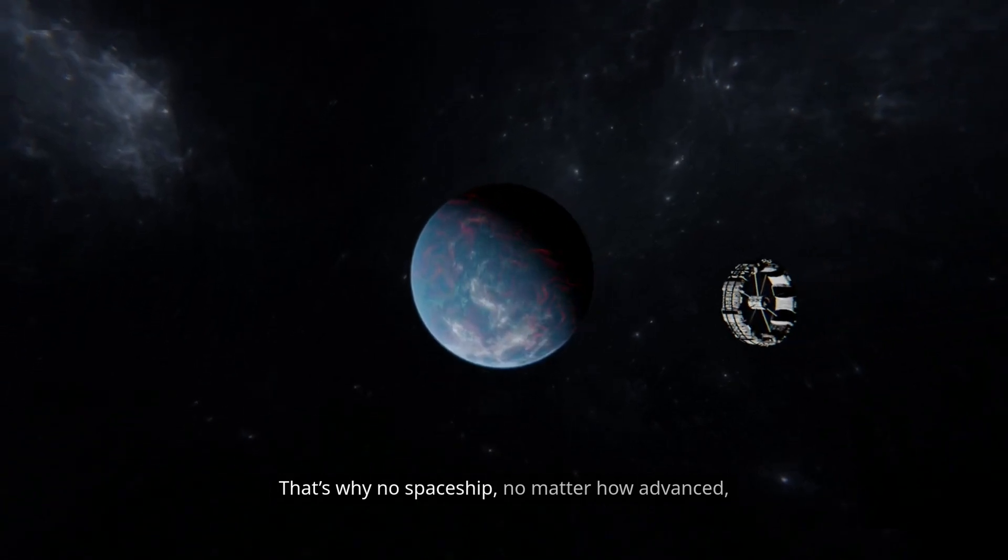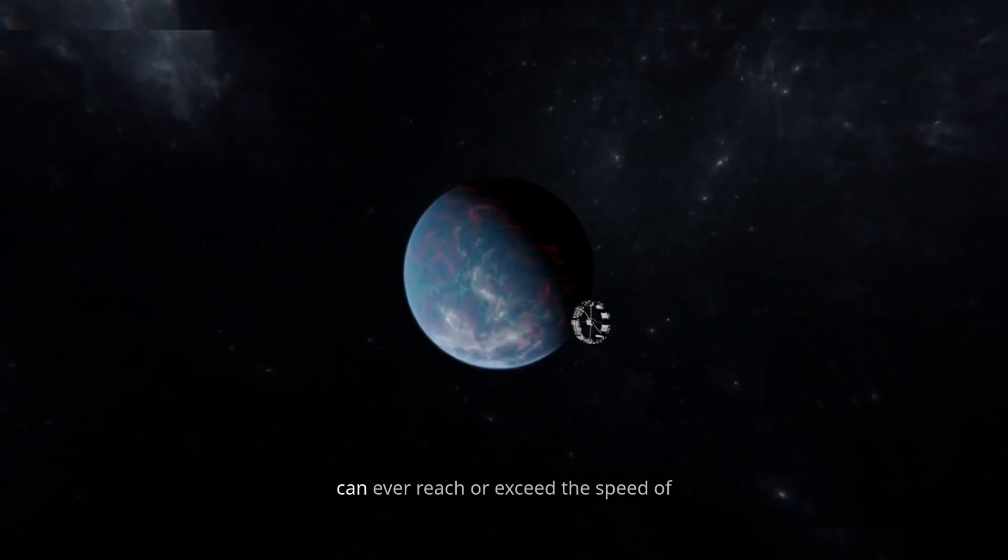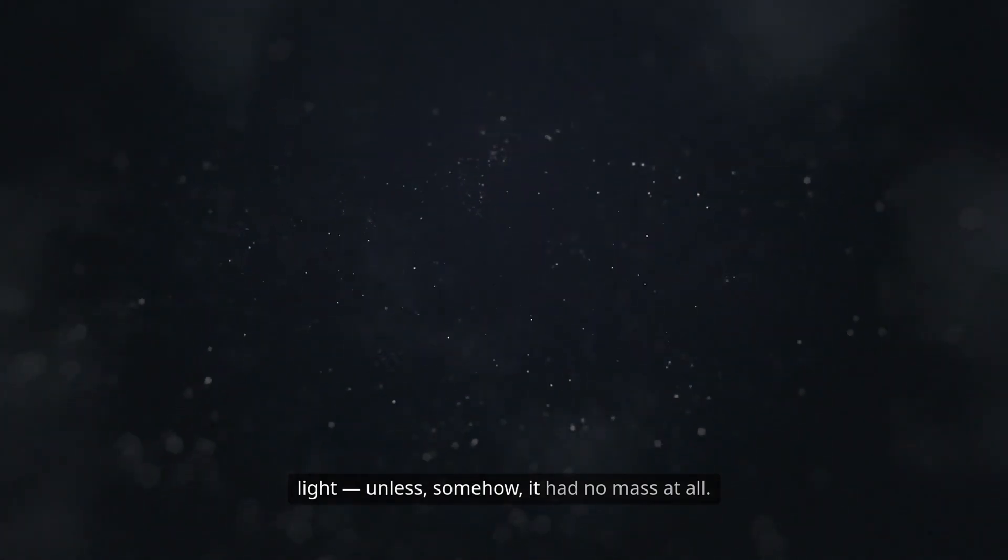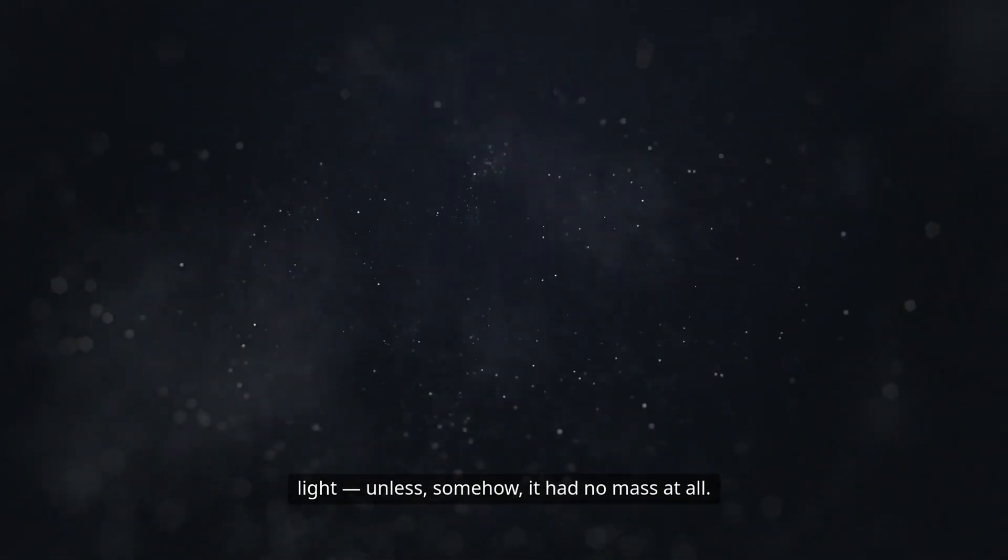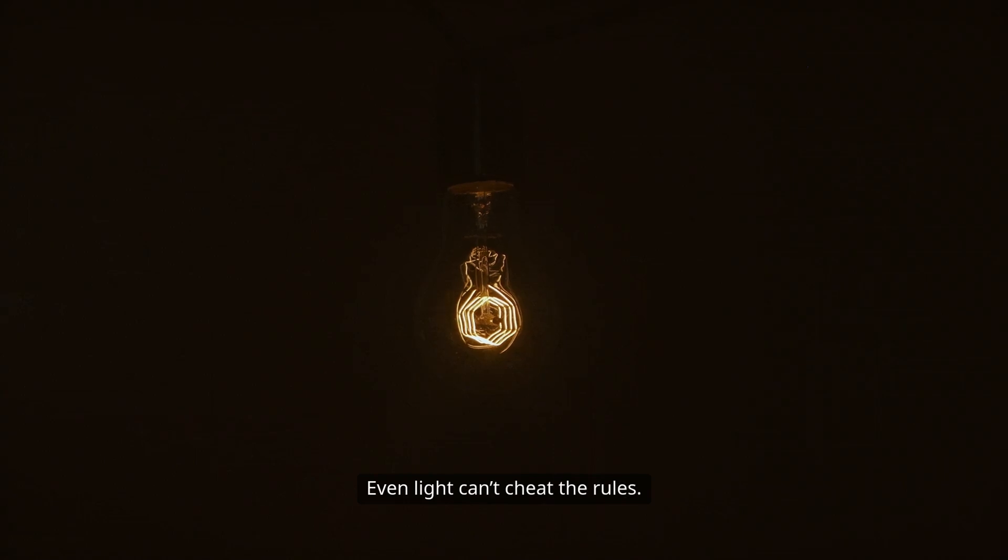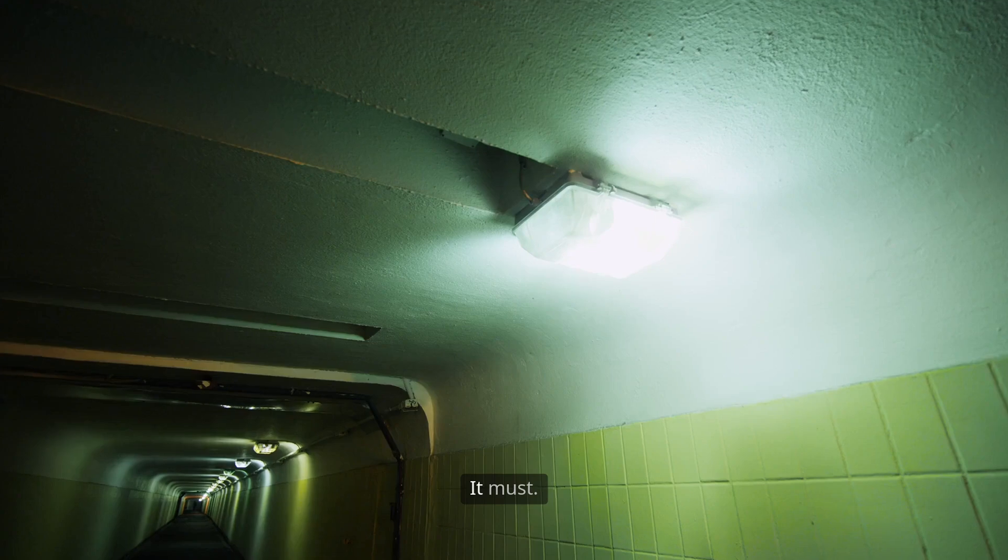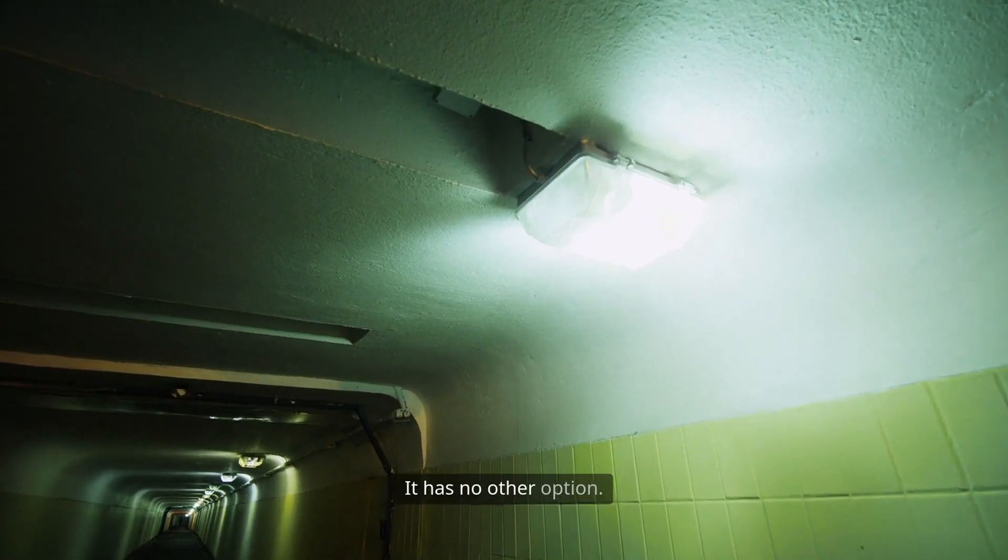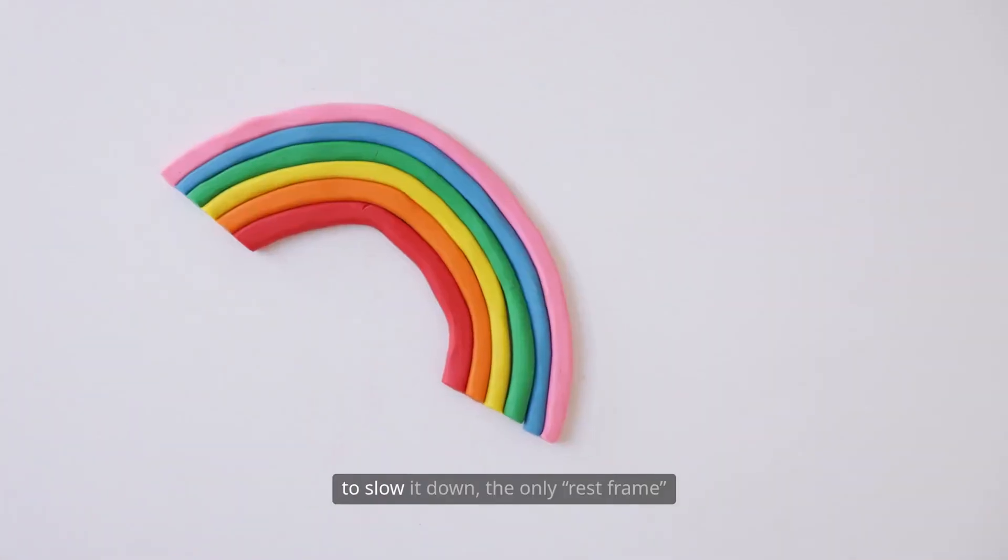That's why no spaceship, no matter how advanced, can ever reach or exceed the speed of light, unless somehow it had no mass at all. Even light can't cheat the rules. It doesn't choose to travel at light speed. It must. It has no other option. With no mass to resist motion and nothing to slow it down, the only rest frame it knows is this universal maximum.